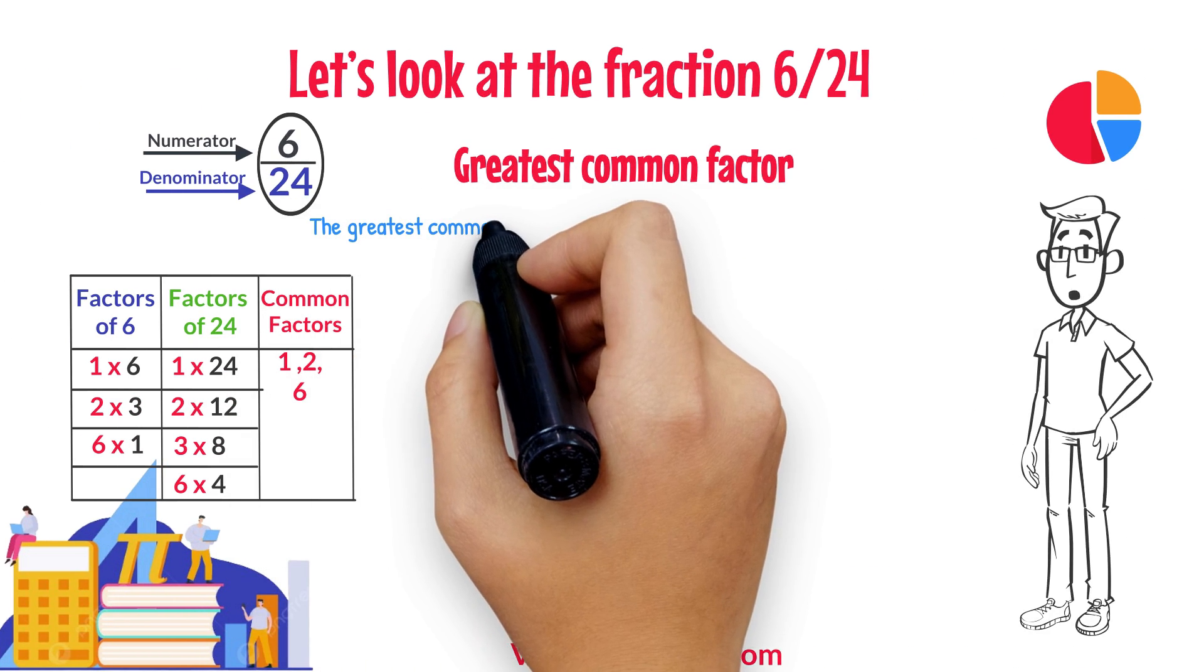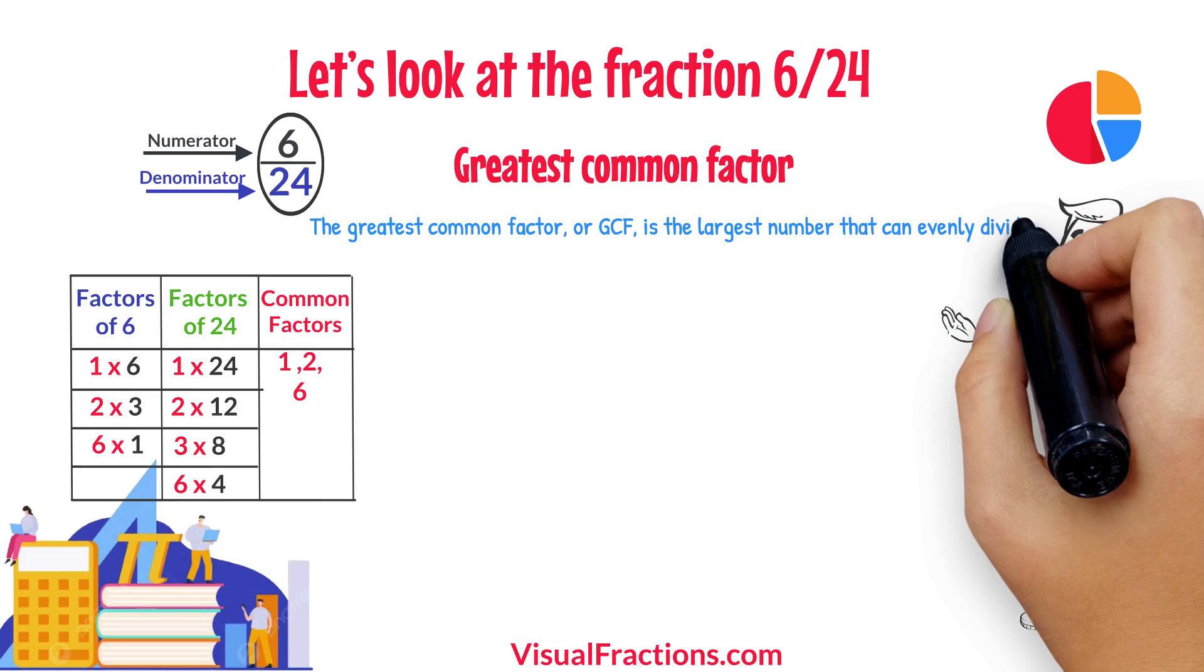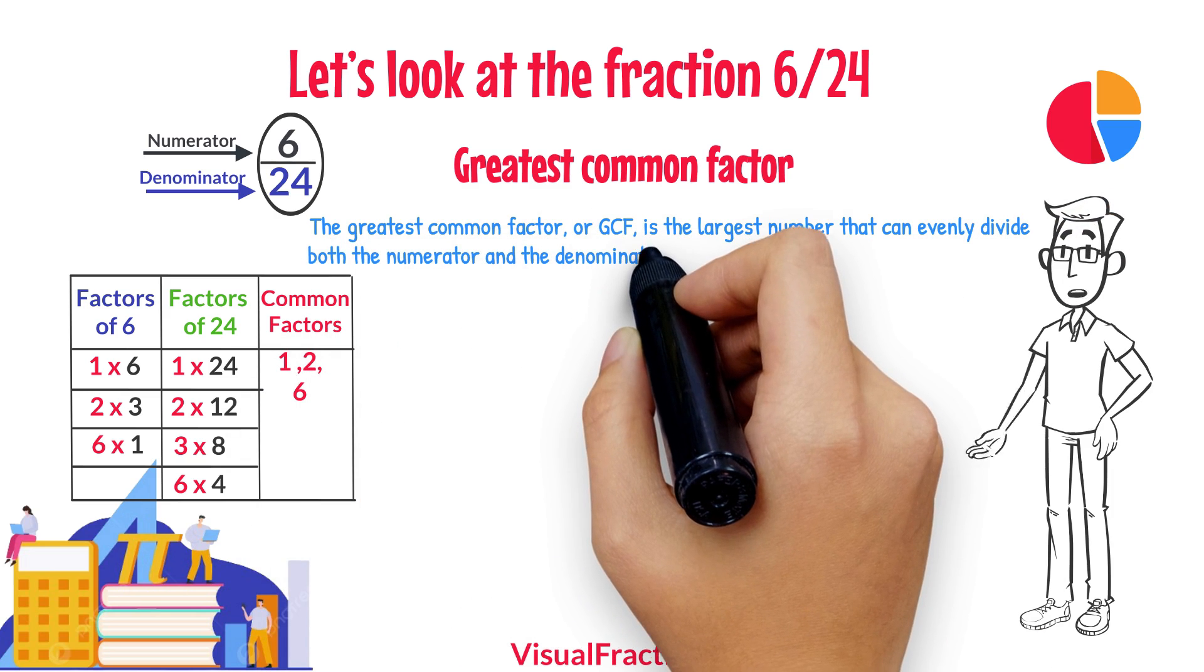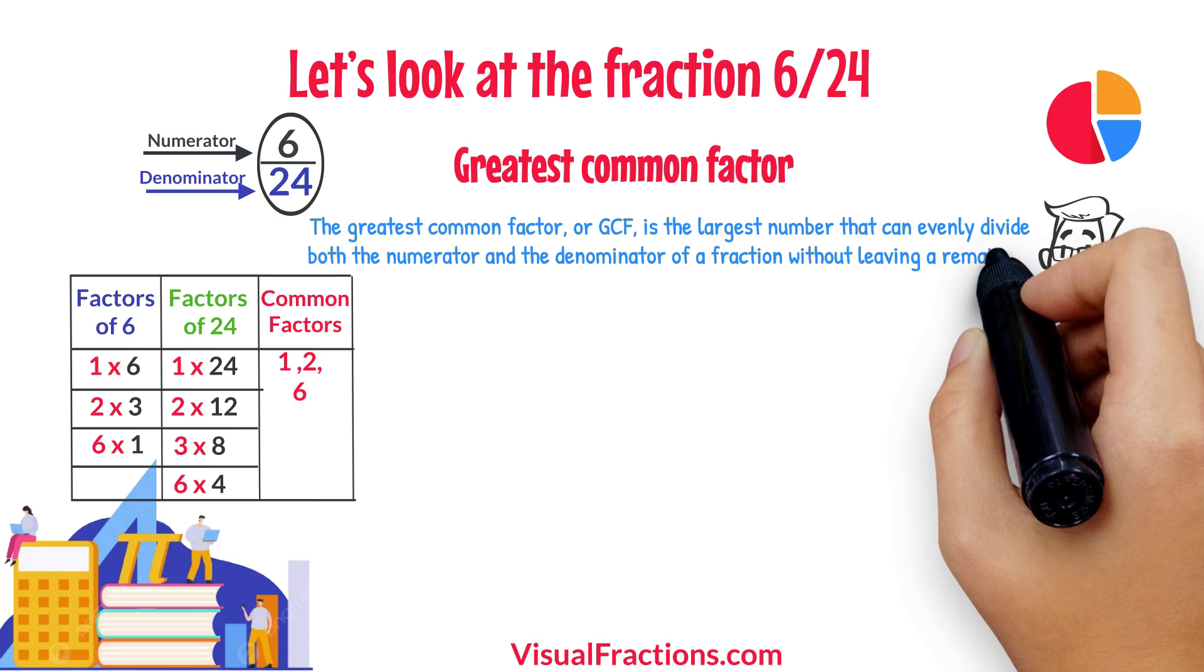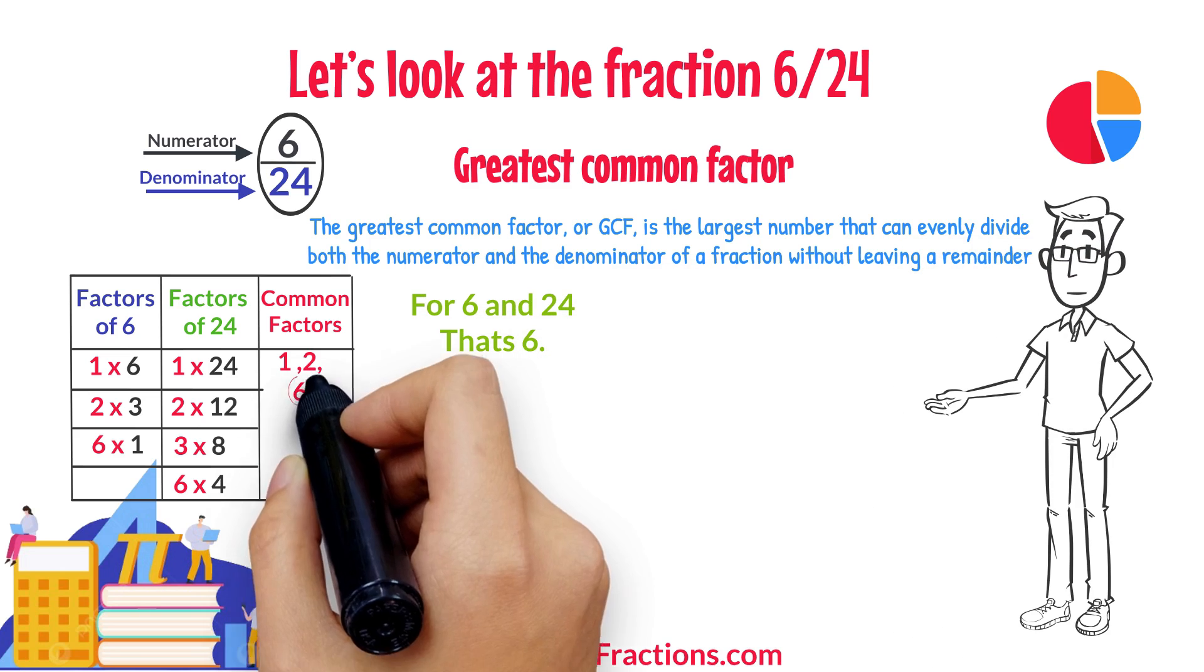The greatest common factor, or GCF, is the largest number that can evenly divide both the numerator and the denominator of a fraction without leaving a remainder. For 6 and 24, that's 6.